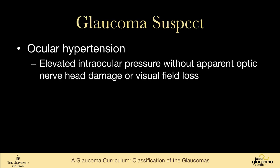We also have people who are glaucoma suspects — they don't have glaucoma, but we're watching them for it. Ocular hypertension means the intraocular pressure is outside the normal range without apparent optic nerve head damage or visual field loss. These are people who are at risk for glaucoma but don't have it, and we'll have a whole section on ocular hypertension.